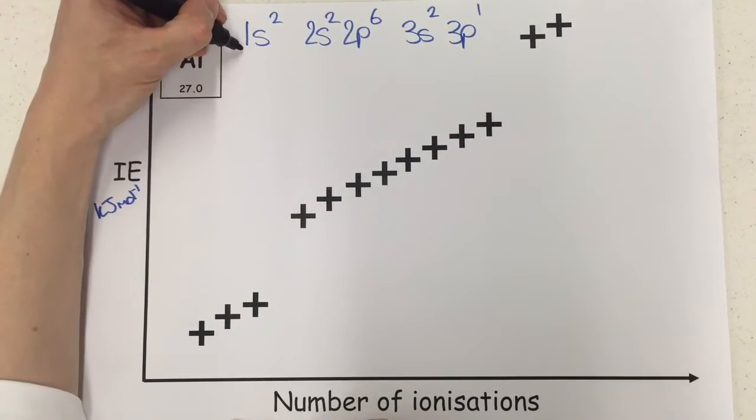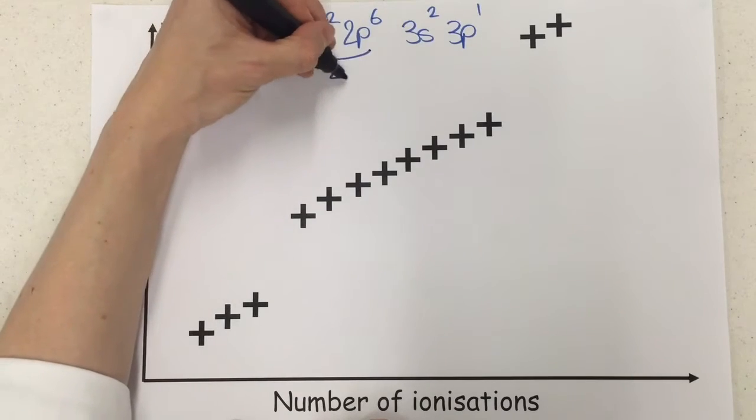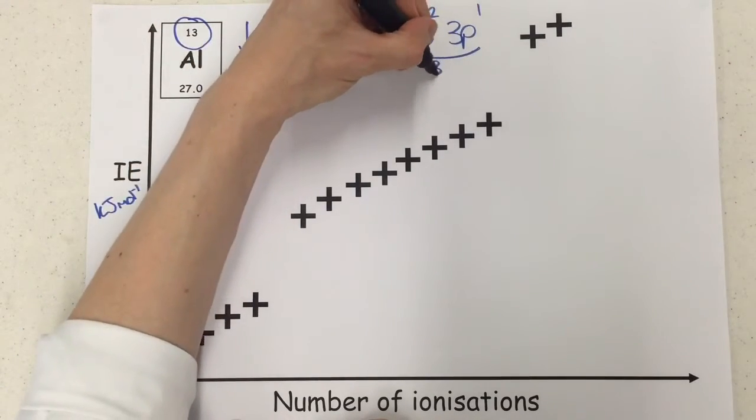And we can group these by shell, so we've got shell 1 is just here, shell 2 is just here, and shell 3 is just here.